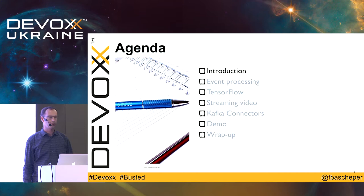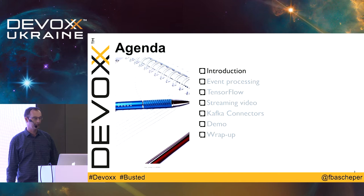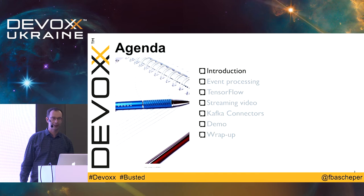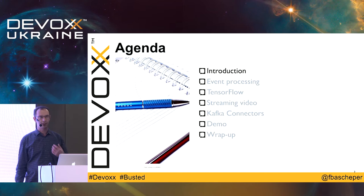The agenda for today: I'll start with a quick introduction, then cover a couple of topics like event processing, how you can apply TensorFlow using Kafka Streams, Kafka Connect, a demo that should hopefully go well — it didn't at first, I got a null pointer exception — hopefully the demo gods will be with me this time. And a quick wrap-up at the end, followed by questions. There should be ample time for questions afterwards.